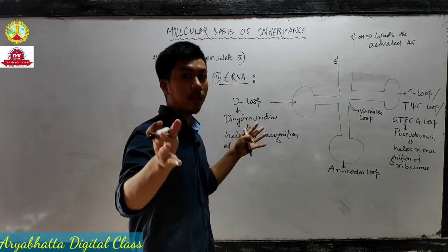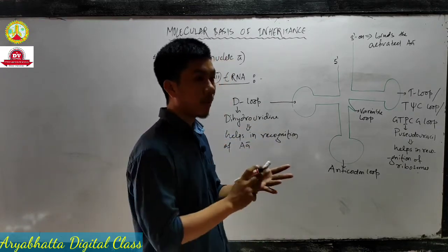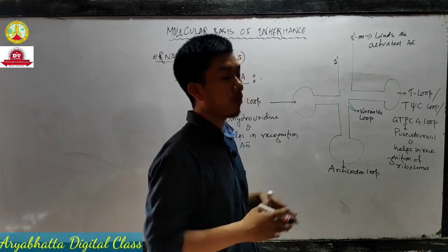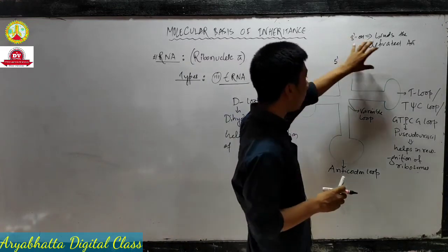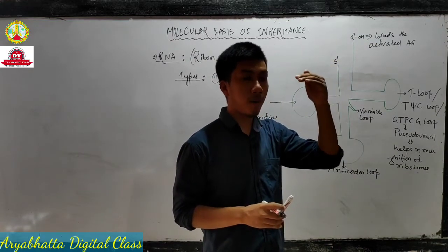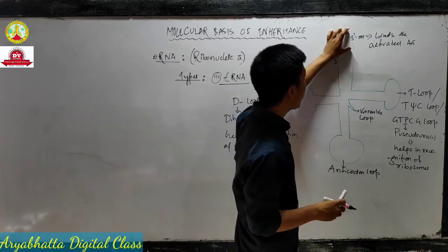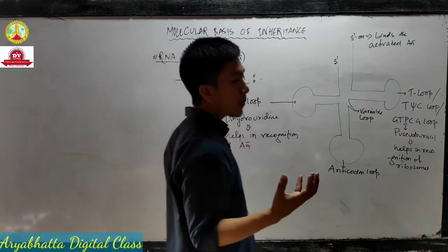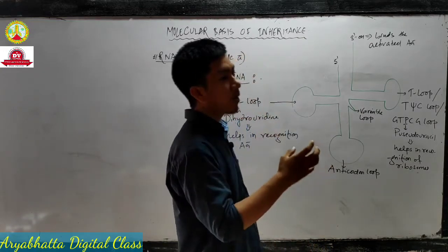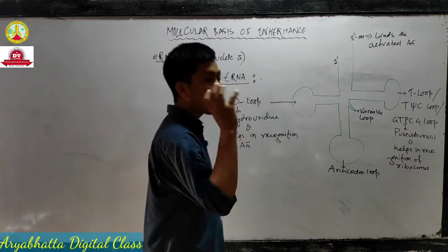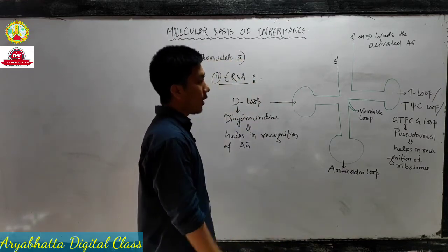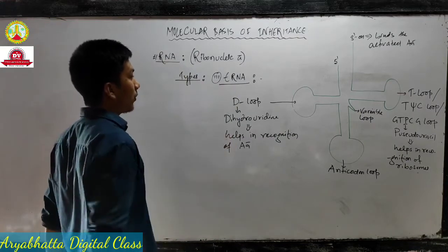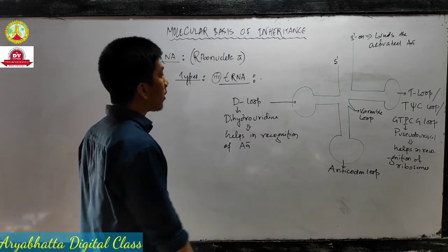A long chain of amino acids makes the structure of protein - we have discussed primary, secondary, tertiary, and quaternary structure. Here we are going to see how the actual process takes place for protein formation. The tRNA carries activated amino acids at the 3' end because the 3' end always has the free OH functional group, which can bind another molecule. tRNA carries about 20 amino acids for the formation of protein through transcription and translation.